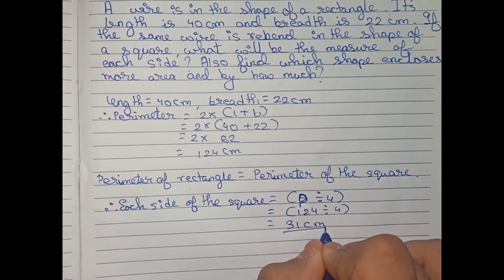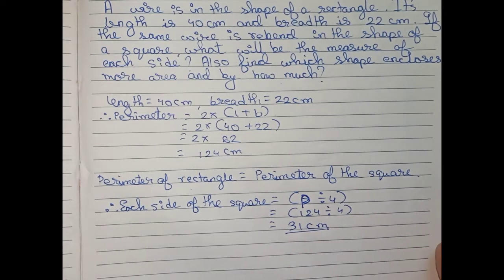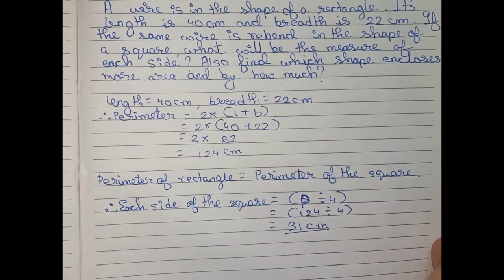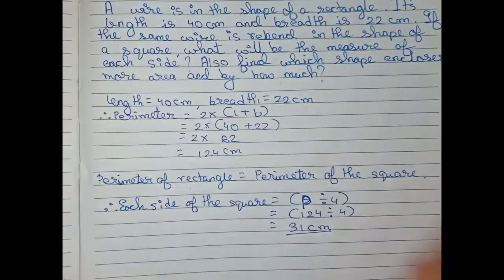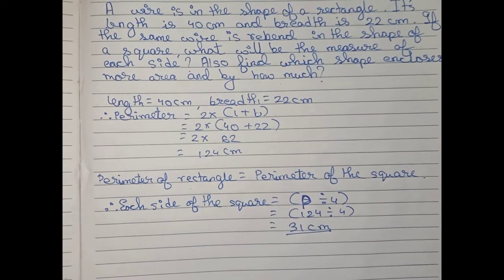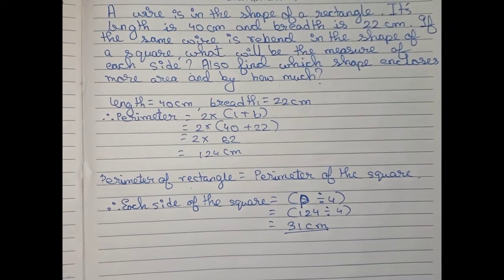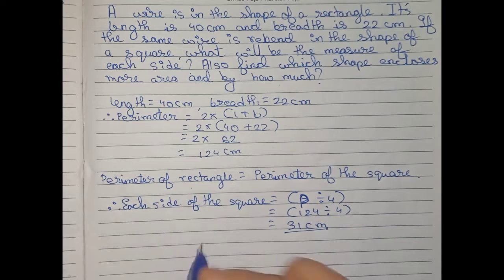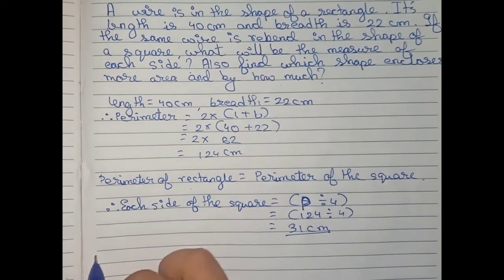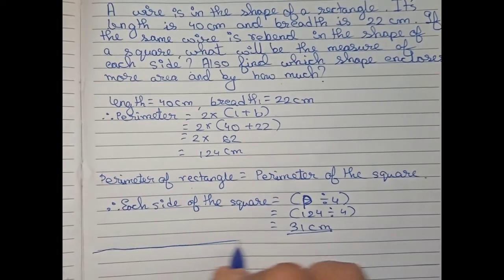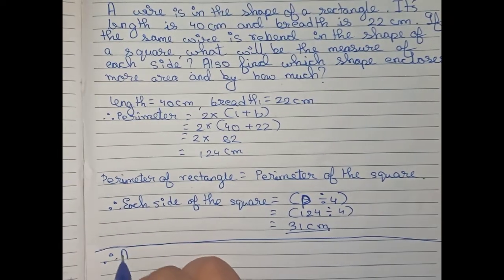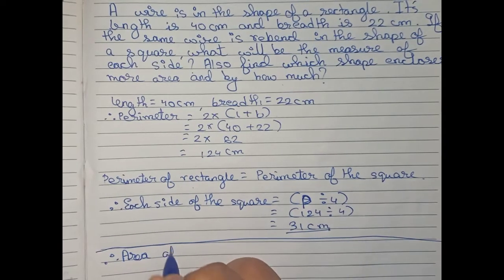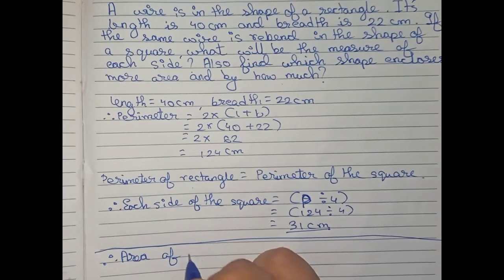So this is the measure of each side of the square — our first answer. Now it is also asked to find which shape encloses more area and by how much. Therefore, we first find the area of the rectangle.